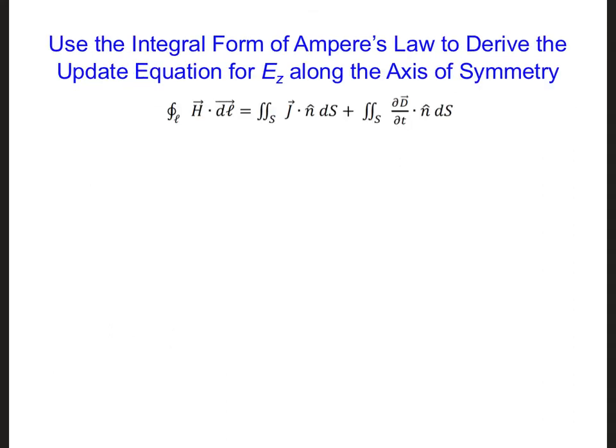Applying this equation along the axis of symmetry, we will get the HY component along the contour line, the circumference of the circle, which is 2 pi R, and R is delta over 2.